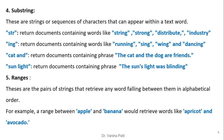Substrings are strings or sequences of characters that can appear within a text word. They can occur at the start, in between, or at the end, but must be a continuous pattern. For example, if the substring is 'str,' it retrieves words like 'string,' 'strong,' 'distribute,' and 'industry,' where 'str' appears at any position.